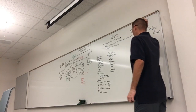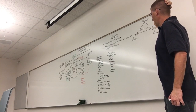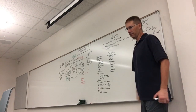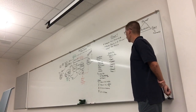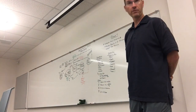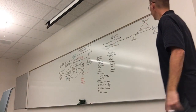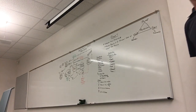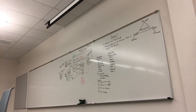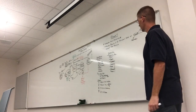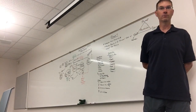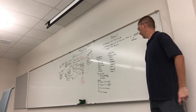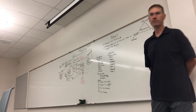We treat distributive shock as a pipe problem, which means we may give some fluids, but another important part is to constrict — make the container smaller. Alpha agonists are going to be important. Norepinephrine is a go-to agent for septic shock. For anaphylaxis, epinephrine is the go-to. For neurogenic and spinal shock, cautious use of norepinephrine. Vasovagal tends to be self-limiting.